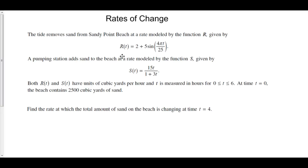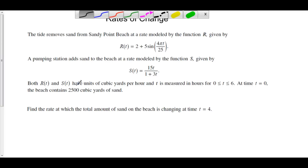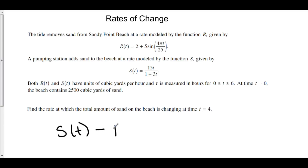If r is the rate at which sand is being removed, then r is going to be negative because we are taking that away. If the pumping station adds sand at the rate of s of t, then we are adding at this rate — this is a positive rate. So s is positive, which means the amount of sand is increasing, and r is negative because the amount of sand is decreasing because of r. The total rate of change is the rate at which sand is being added minus the rate at which sand is being removed.